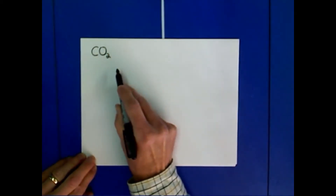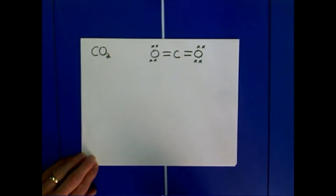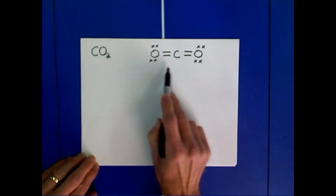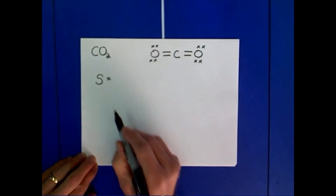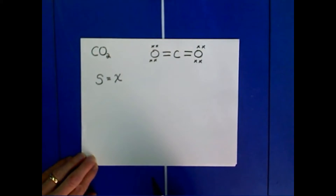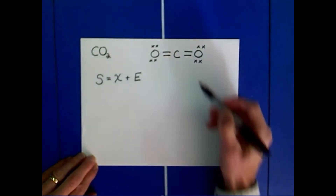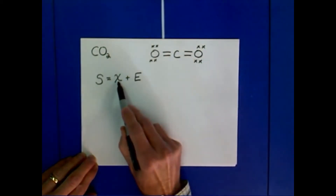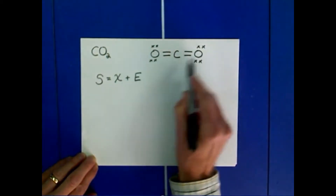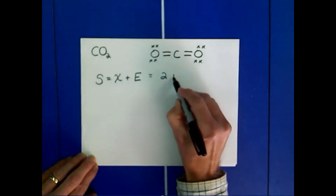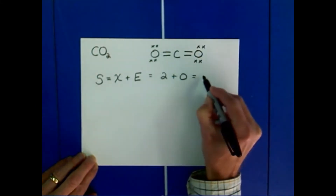If we draw the Lewis structure for carbon dioxide, it's going to look something like this. The first thing we want to do when determining the structure for carbon dioxide is determine the steric number, which is the number of atoms attached to our central atom plus the number of lone pair electrons on the central atom. X is going to stand for the number of atoms attached to our central carbon, which is 2. And the number of lone pair electrons on our central carbon is none, so our steric number is 2.